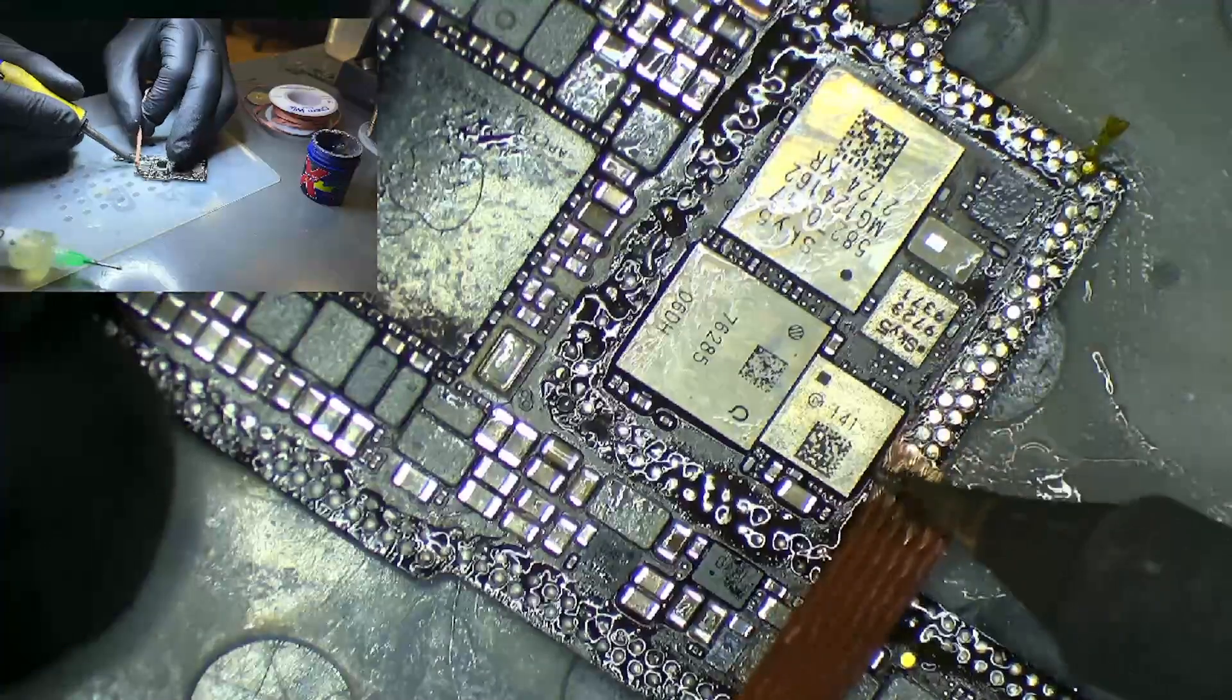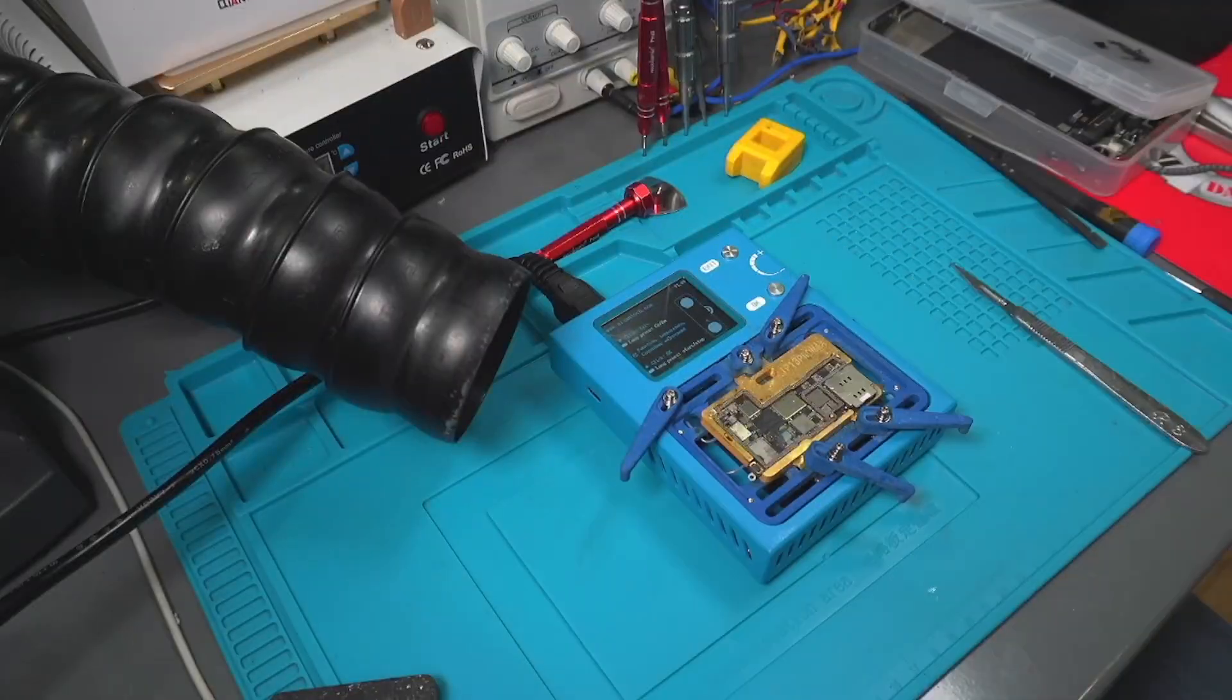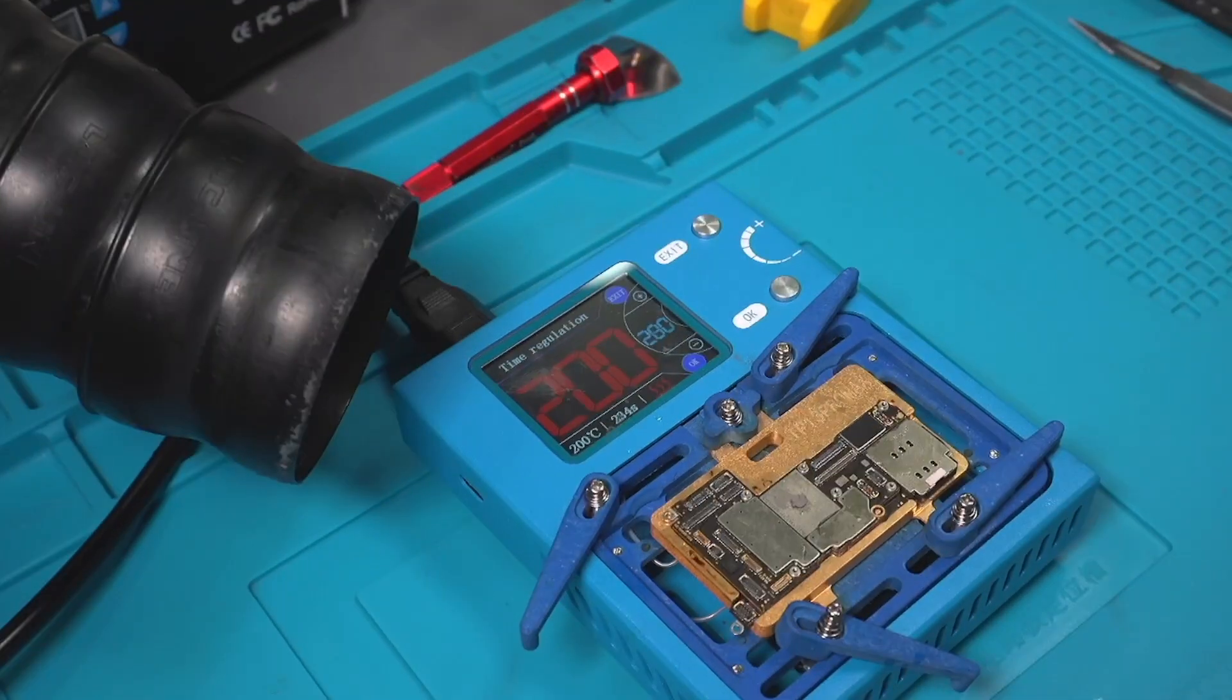After that, we clean the lower and upper motherboards and reball the lower motherboard. Now, we solder the two boards together with the preheater at 200 degrees Celsius.